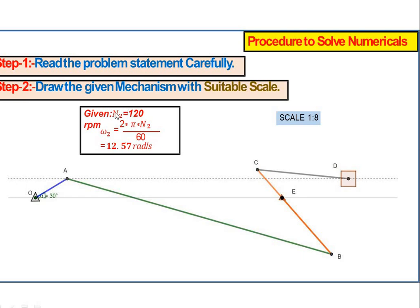The crank RPM is given as 120 RPM. Omega is calculated as 120 × 2π / 60 = 12.57 rad/s. We are taking a scale of 1:8 mm.